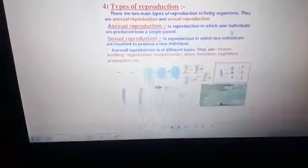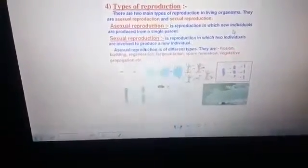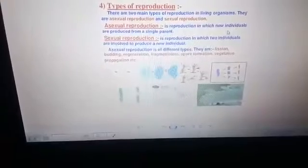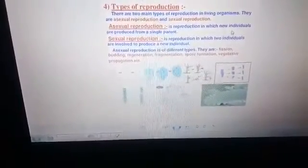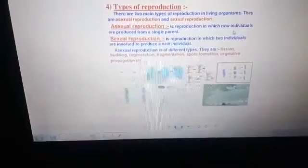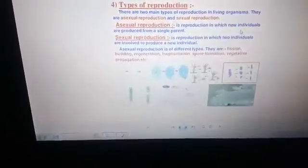Asexual reproduction is of different types according to unicellular or multicellular organisms. The following types are: fission, budding, regeneration, fragmentation, spore formation, and vegetative propagation.